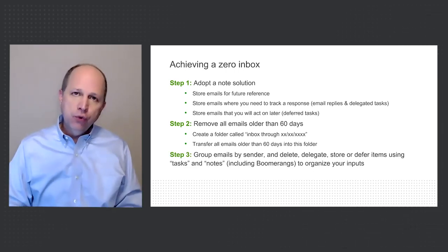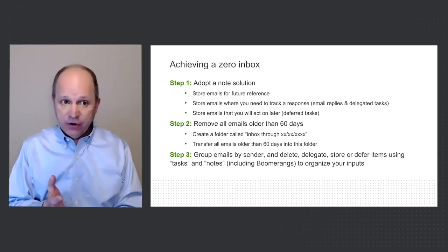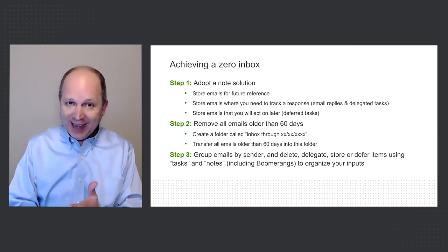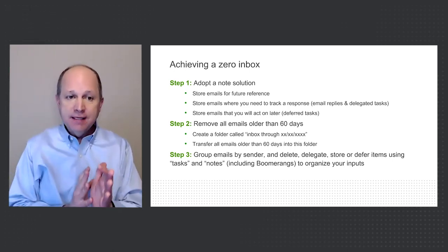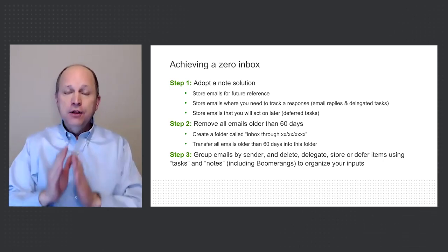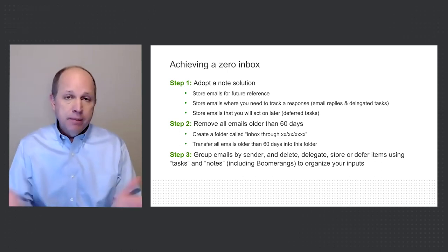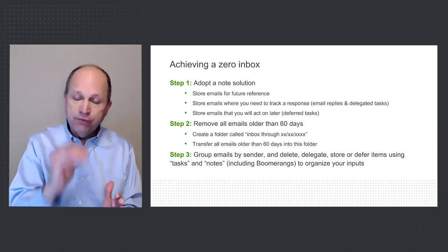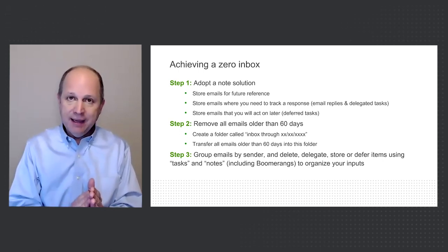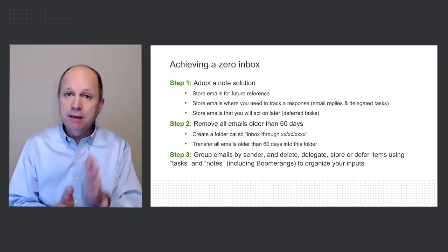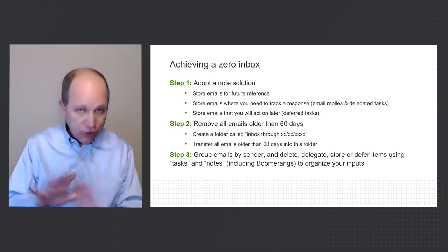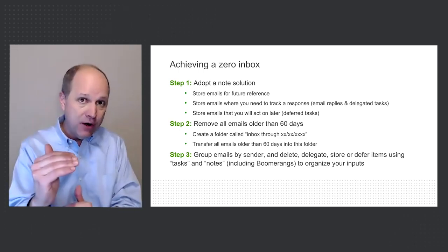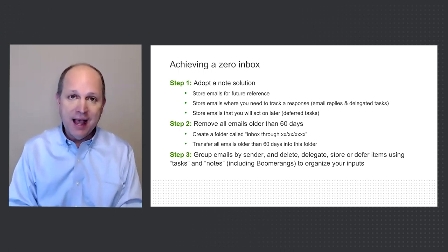In step three, you're going to group the emails that remain within a 60-day horizon by sender. Then you're going to run the Ds: delete it, delegate it, file it, defer it — all the way back to one of the first slides. You're going to make that decision about each and every one. You group by sender because a lot of times you can make a simple reply to one person, knock out four or five emails with bullets, consolidate into a single reply, delete four or five things, and you're done. Sometimes one task can encapsulate four or five emails. I don't like grouping by thread because there might be four or five threads handled with one task or one reply. Group by sender, and then you can knock those things out in broad strokes.